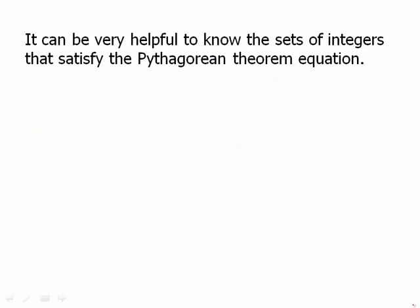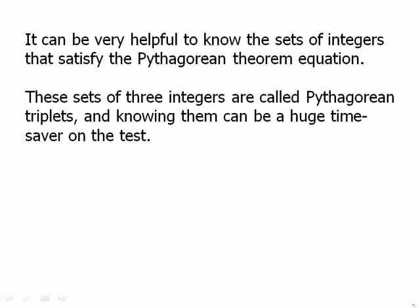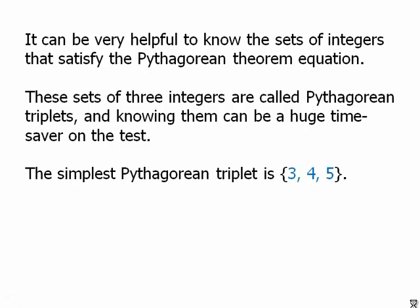It can be very helpful to know the sets of integers that satisfy the Pythagorean theorem equation. These sets of three integers are called Pythagorean triplets, and knowing them can be a huge time saver on the test. The simplest Pythagorean triplet is 3-4-5. Just by the fact that the sides satisfy the equation a² + b² = c², that's enough to guarantee we have a right angle there.